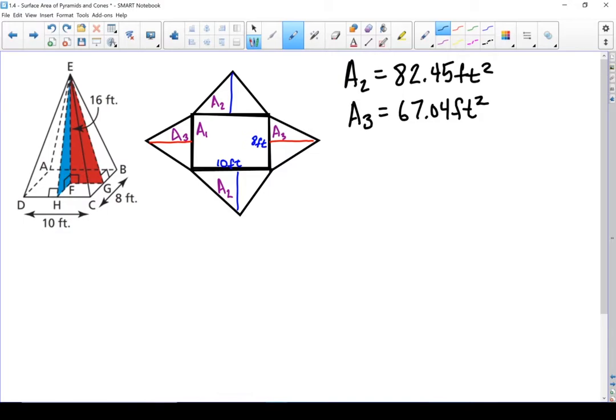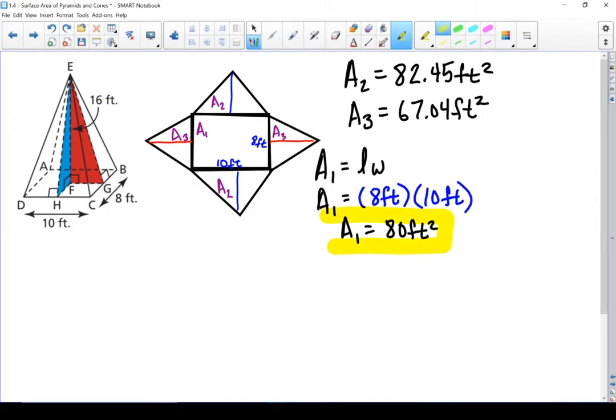I've now found the areas of all of my triangular faces. Let's find the area of that base, and it's just a rectangle. Area of a rectangle is length times width. Area of my base is 80 square feet.